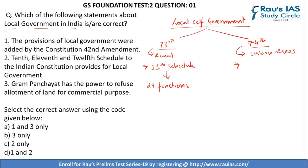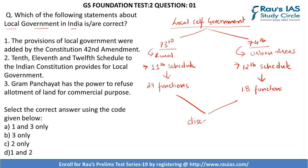The 74th Amendment Act added the 12th Schedule to the Indian Constitution, which deals with 18 functional aspects of the municipalities in the urban area. Please keep in mind that both these functional aspects depend upon the discretion of the state government — that is, whether the state government wants to devolve such powers to the local self-government bodies or not.